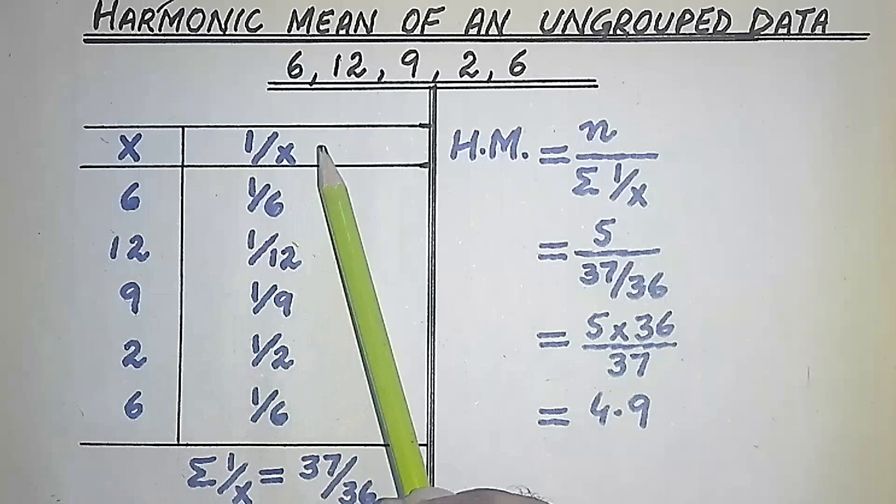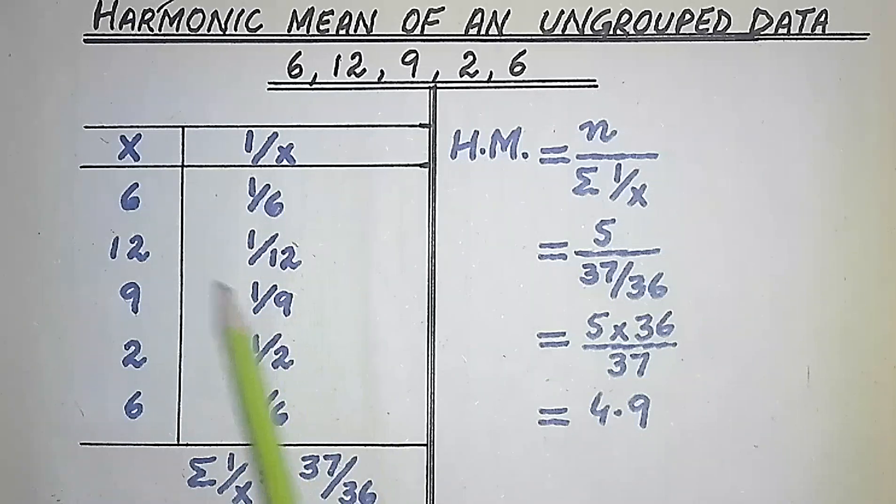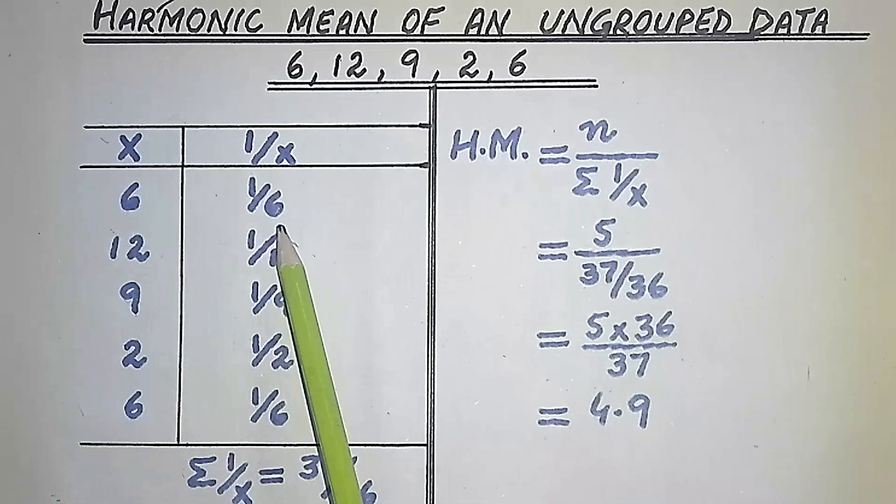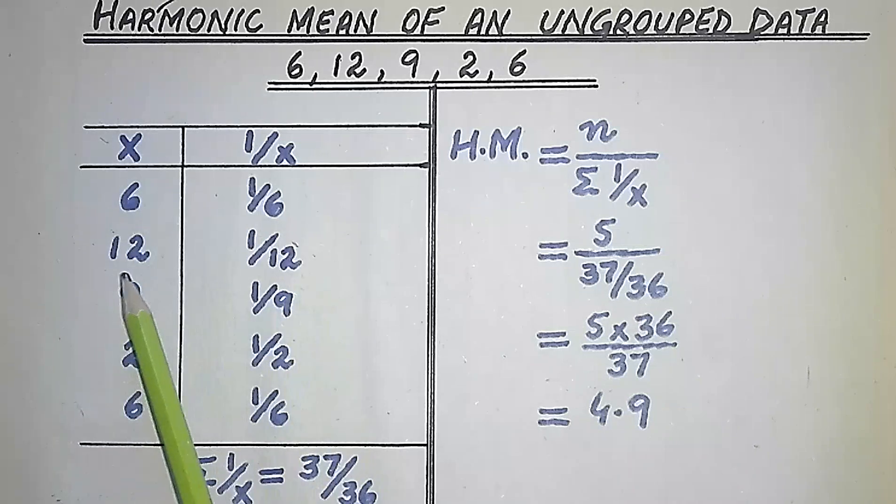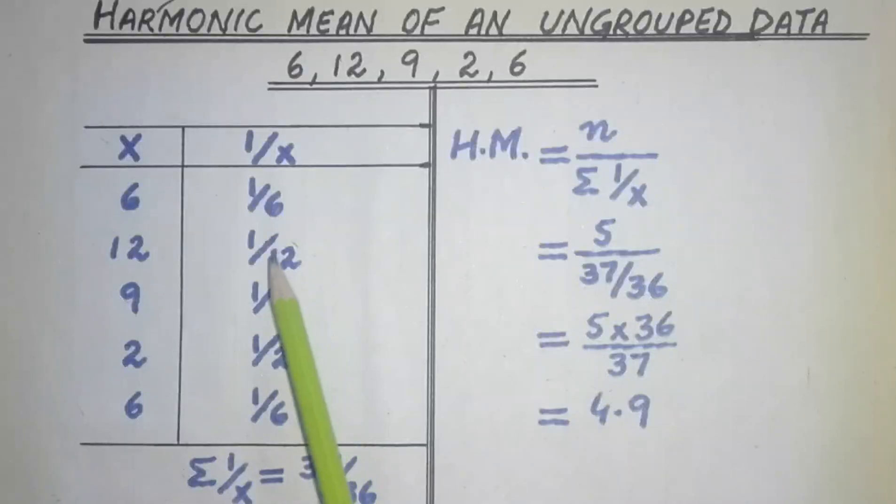First of all, we add a column of 1 over x. So if x is 6, then 1 over x is 1 over 6. When x is 12, 1 over x becomes 1 over 12, and so on. That's how we can find the value of 1 over x for each data point.